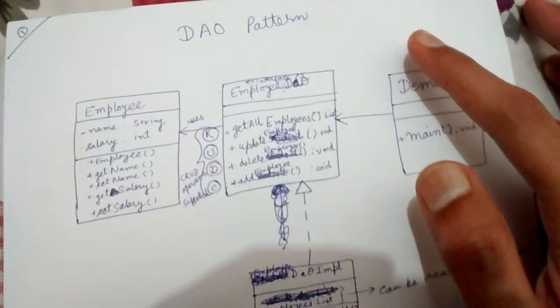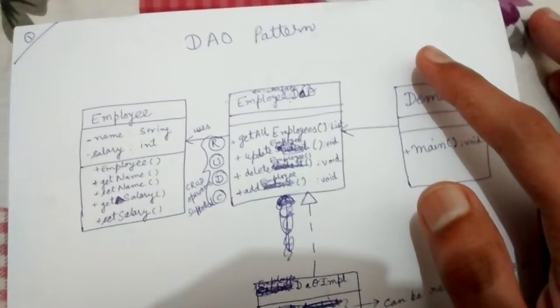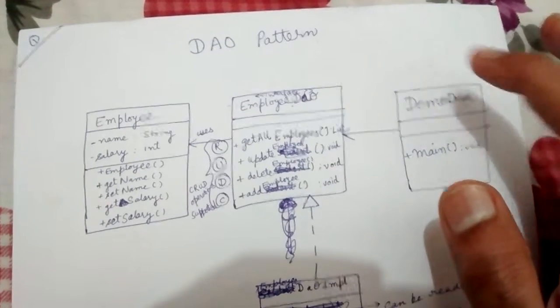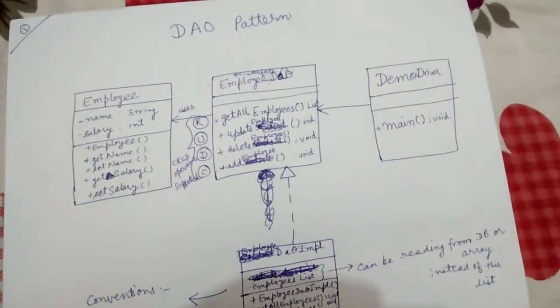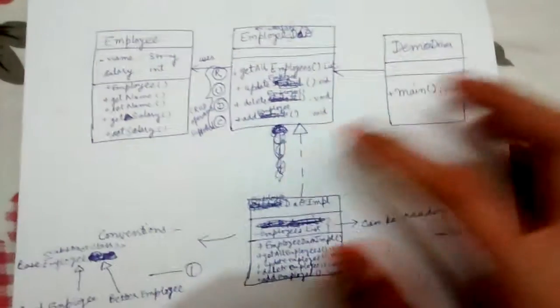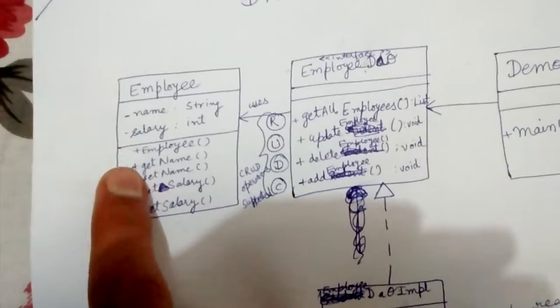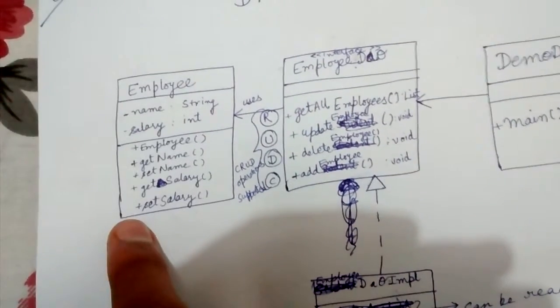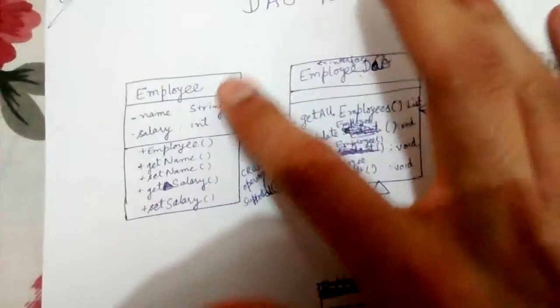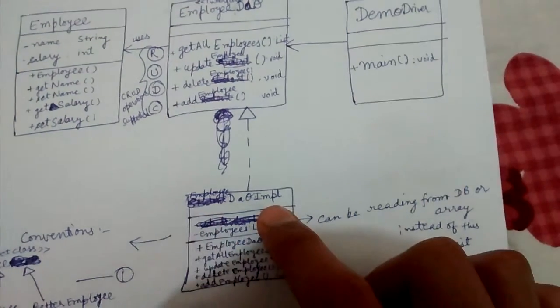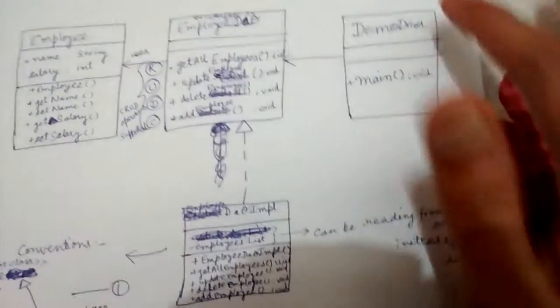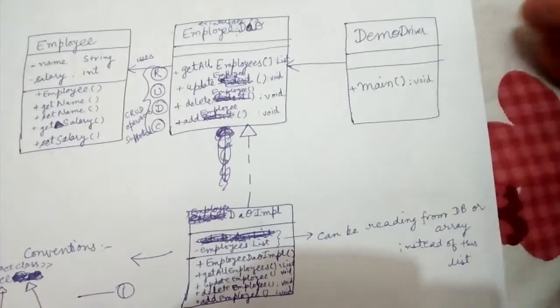Today we'll be looking at a very interesting and important design pattern: the DAO pattern, whose full form is Data Access Object pattern. Here is an Employee class with a constructor, getters and setters, and two attributes: name and salary. There is one Employee Data Access Object interface and here is its implementation, EmployeeDAOEmployee. Here is our client class named DemoDriver.